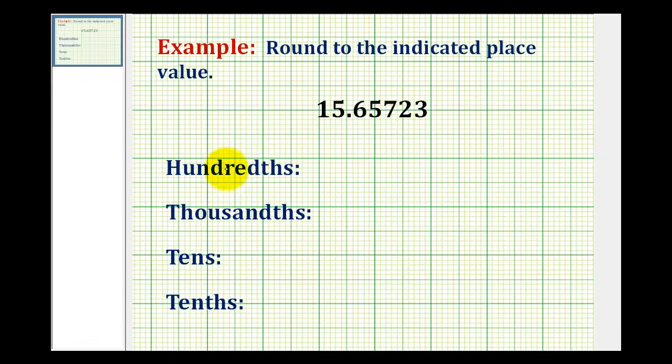We want to round the given number to the indicated place value. So we first want to round this to the hundredths. The first step is to indicate what digit is in this place value. Well here's the tenths, so this five would be in the hundredths place value.